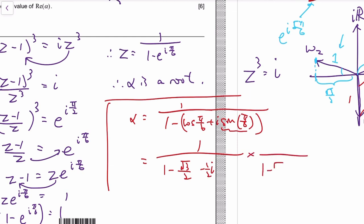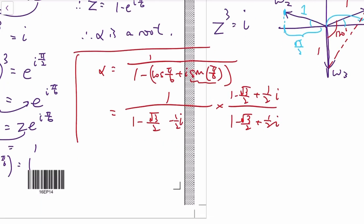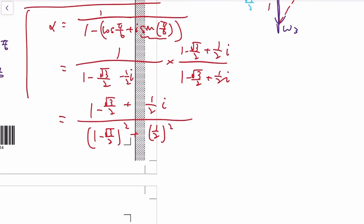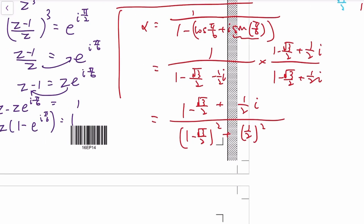Then we can do the conjugate: one minus root 3 over 2 plus a half i times one minus root 3 over 2 plus a half i. So we multiply the top—we basically just have that thing. We multiply the bottom—we have the real part squared plus the imaginary part squared, because i times i is negative one.